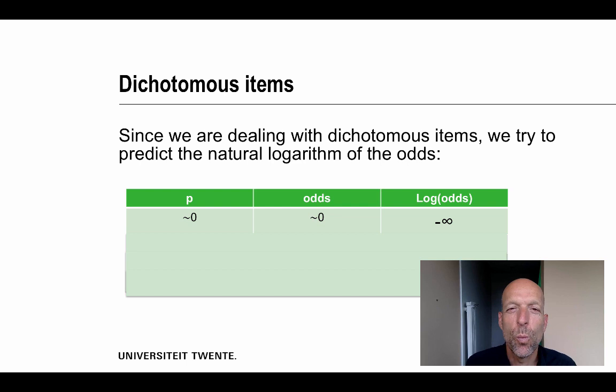In a lot of tests we're dealing with dichotomous items. Dichotomous items have only two values: correct and incorrect, yes and no. And since we're dealing with dichotomous items we have to transform these items into something we can handle. Now this is something difficult maybe, but you have to imagine the following.